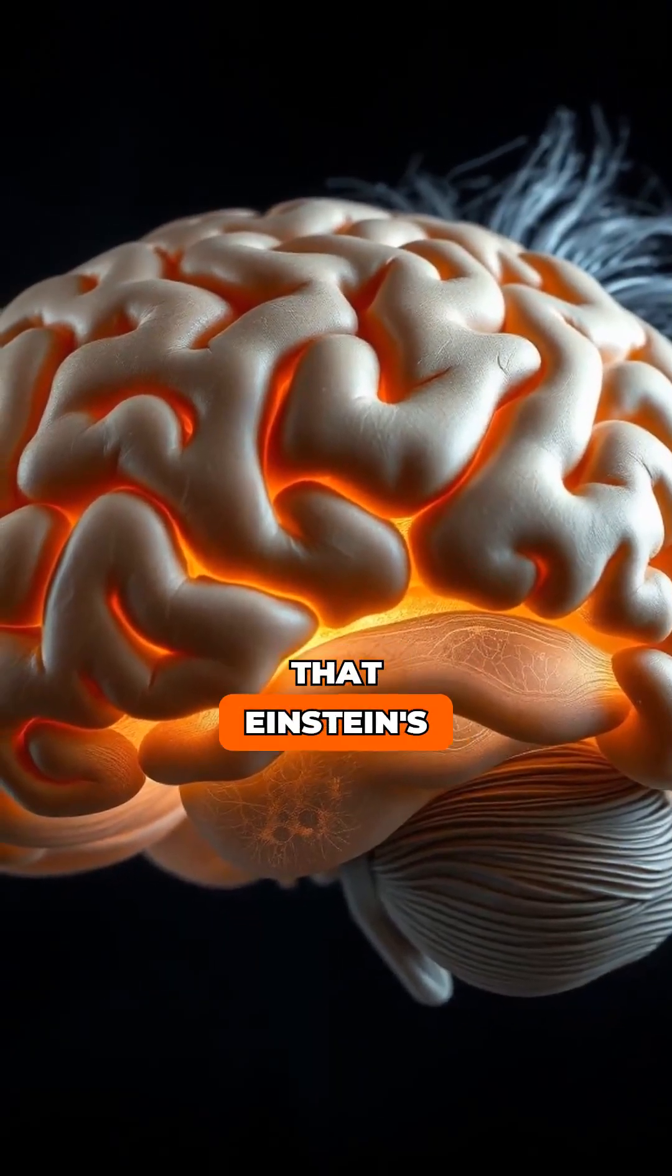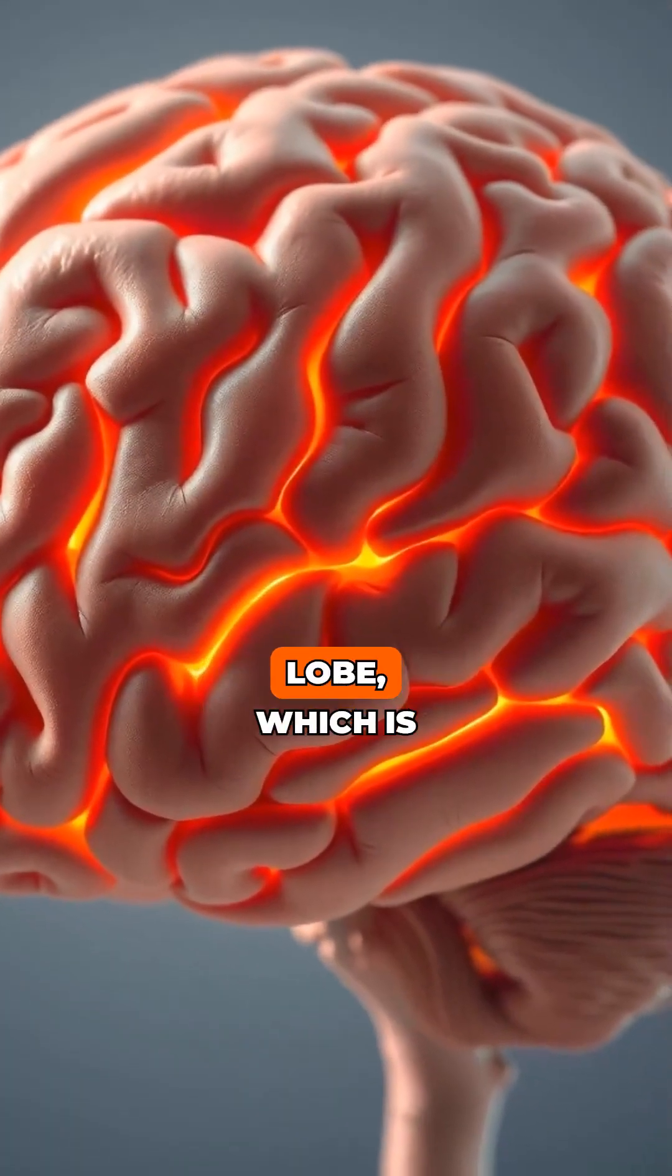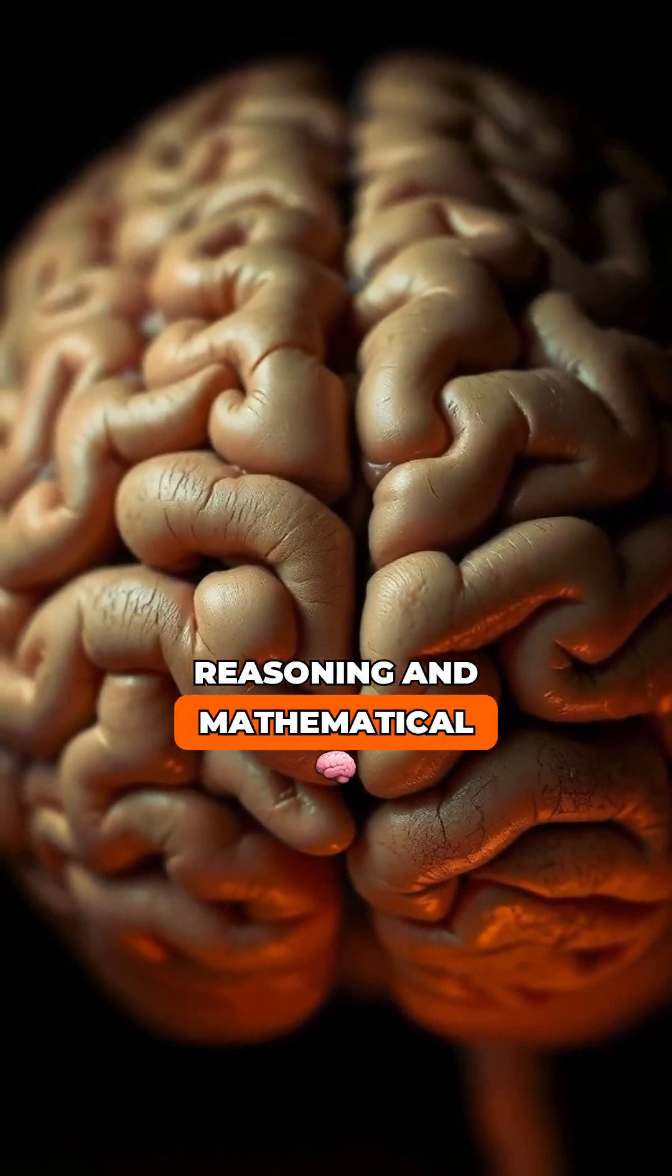Researchers discovered that Einstein's brain had a higher density of neurons in certain areas, particularly the parietal lobe, which is linked to spatial reasoning and mathematical skills.